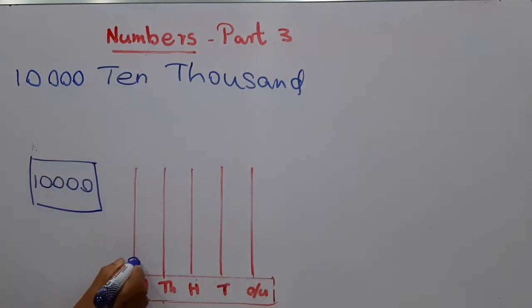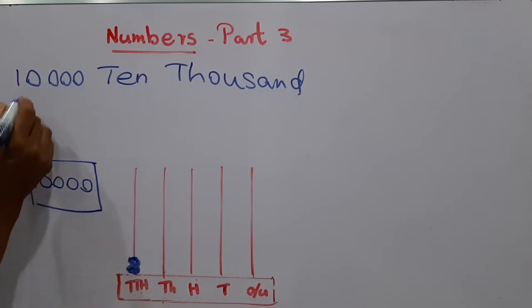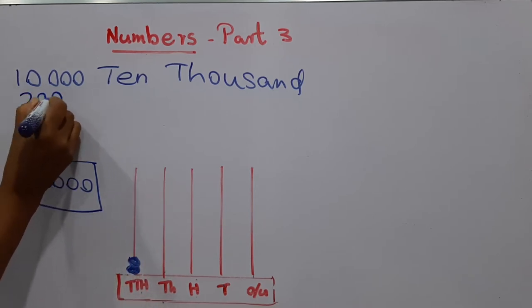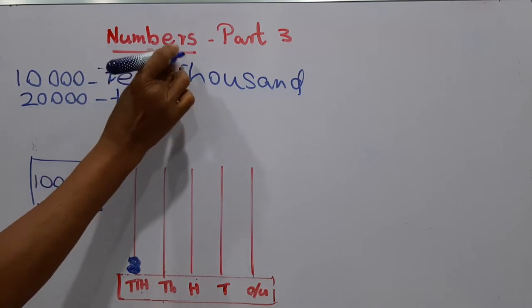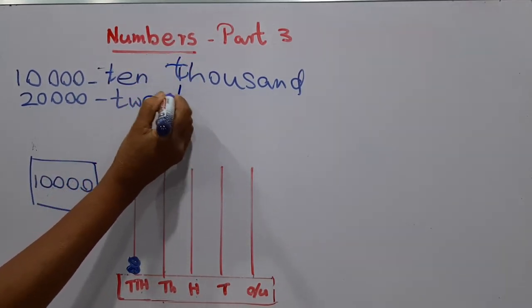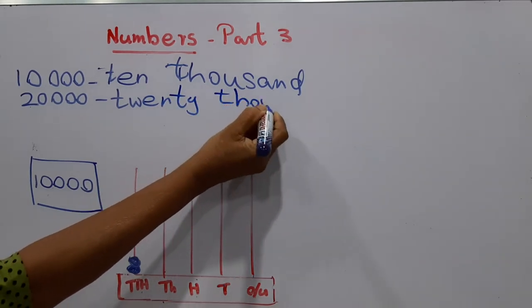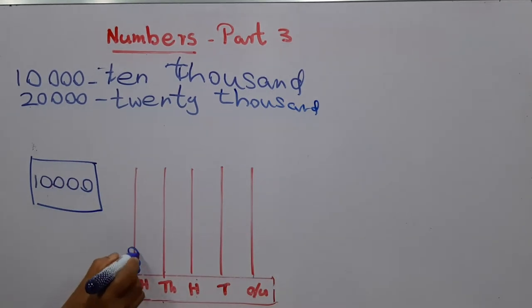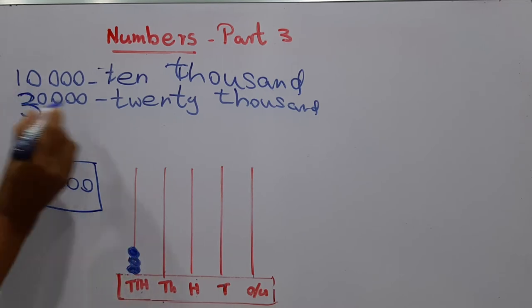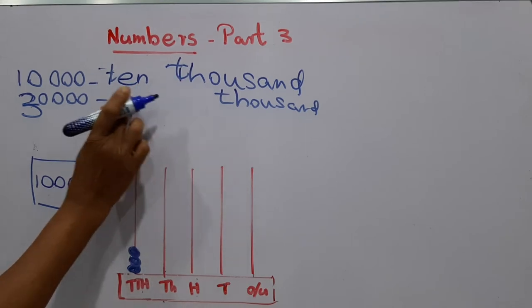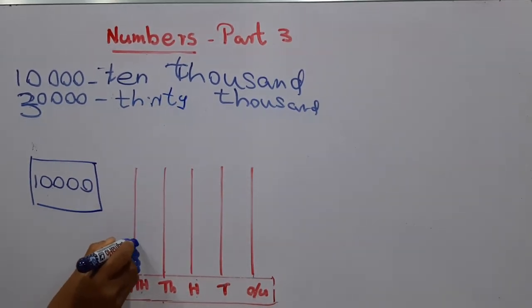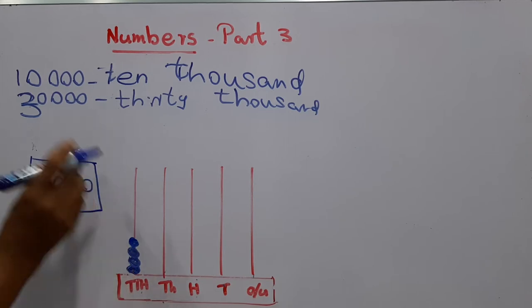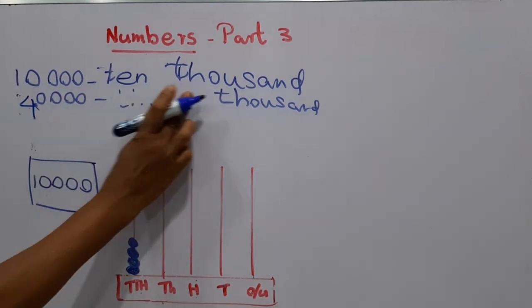If we put another ring on the ten-thousands spike, what will happen? Two ten-thousands means twenty thousand. If we put another ring, that makes three ten-thousands — thirty thousand. We put another ring: four ten-thousands means forty thousand.